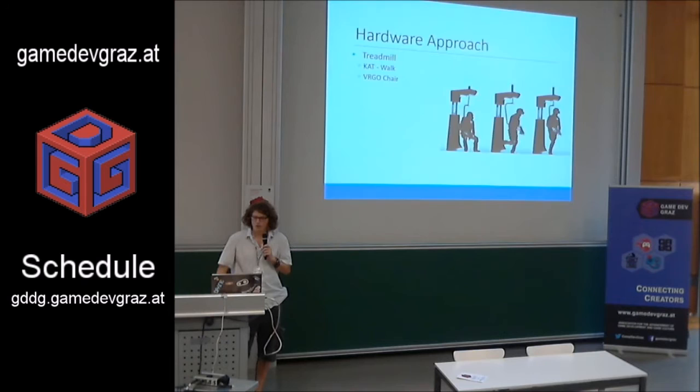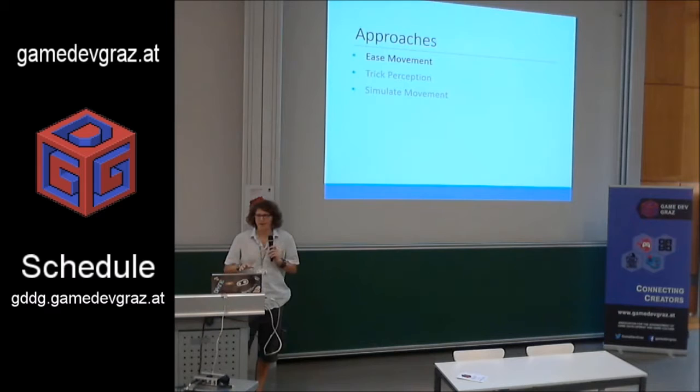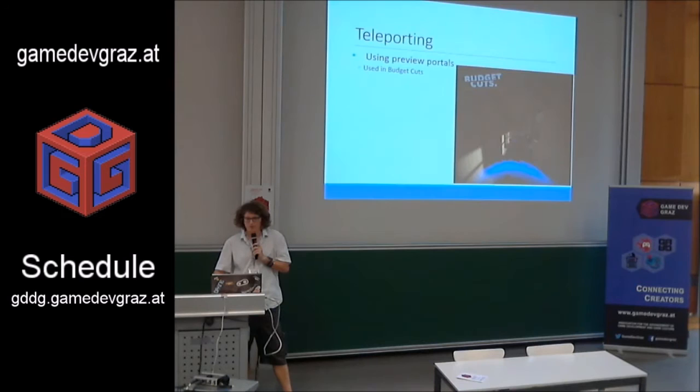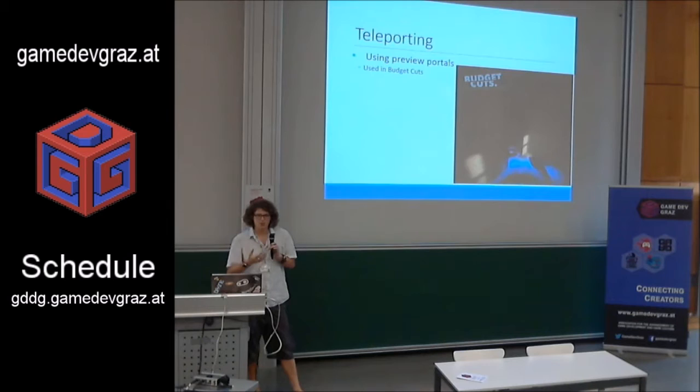These approaches can be broadly categorized into three categories. The first one is how to ease the movement — most similar to how traditional games handle the camera. The most common approach is teleporting. Here we see an example in the game Budget Cuts, where you shoot, then look at where you're going to go — that's the blue bubble — and then actually go there. The great thing is it actually adds to the game, since it's a spy game where you sneak around and look at the routes of guards.